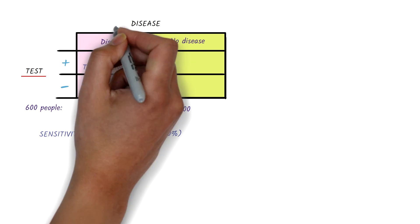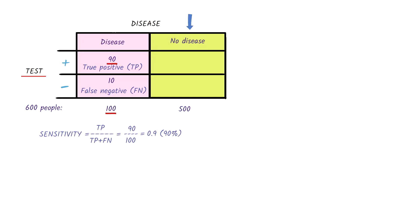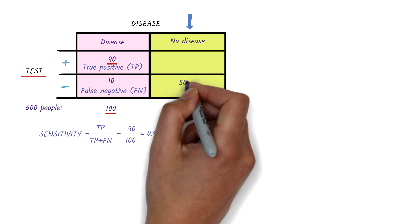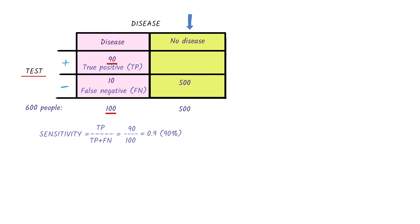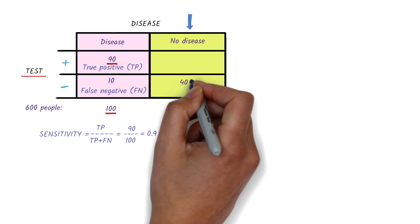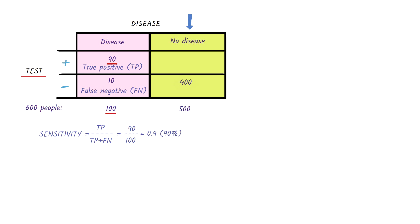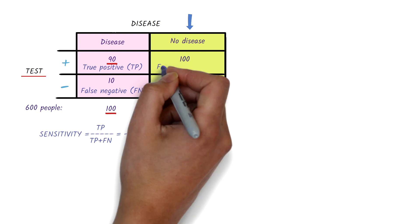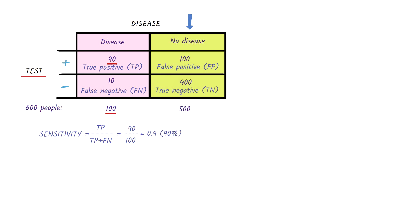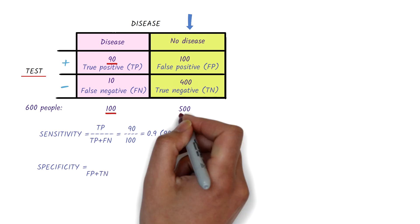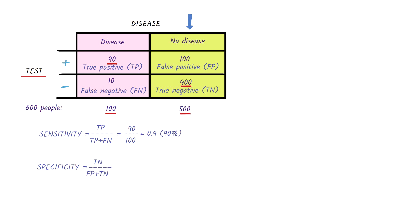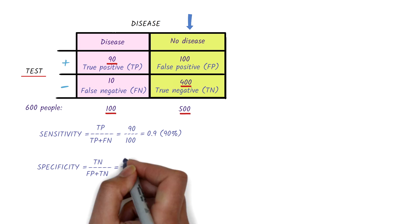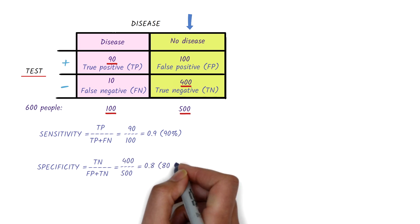Now let's do the test on the 500 people without the disease. Ideally, we will have 500 negative results, but let's assume that the test was negative in only 400 people — these are true negatives. This would mean that in 100 people without the disease, the test was positive; these are false positives. We know that the specificity of the test is the proportion of people without the disease who test negative for it. So in this example, the specificity of the test is 0.8, or 80%.